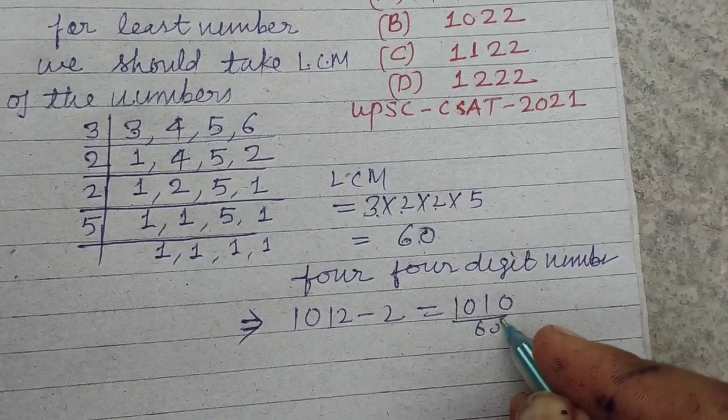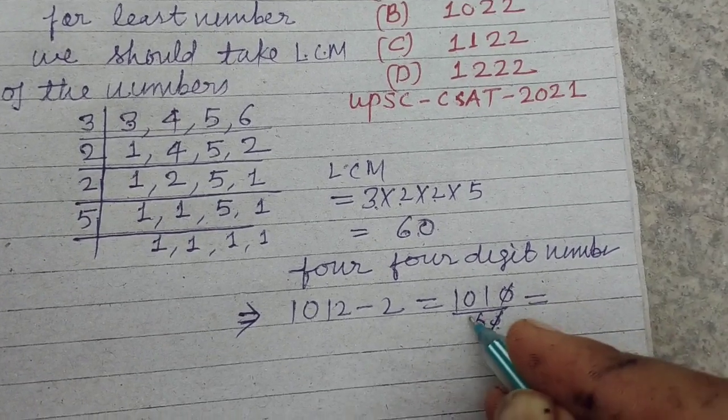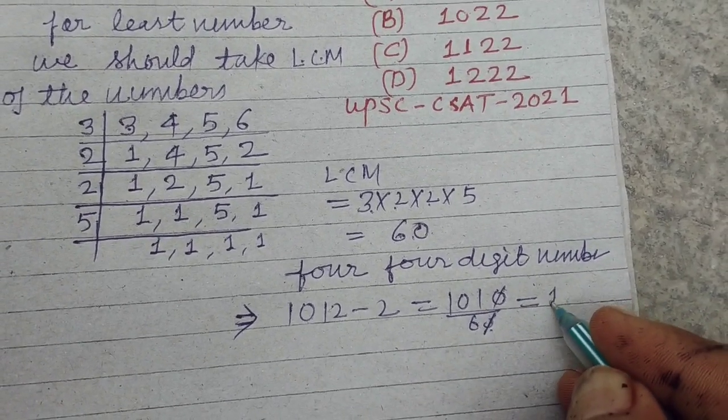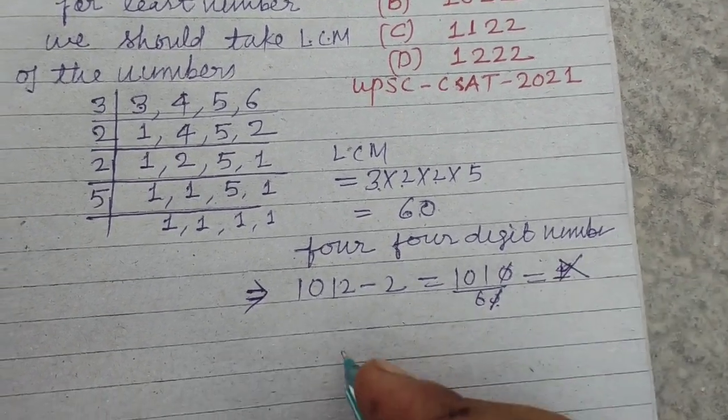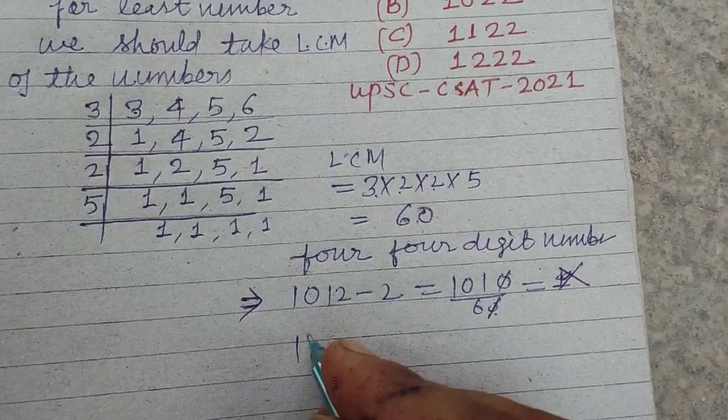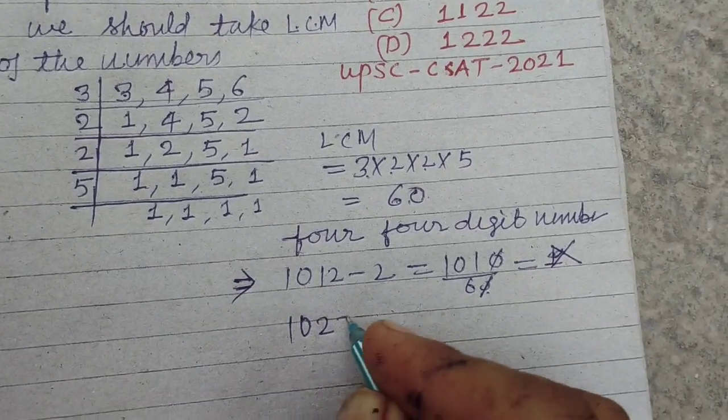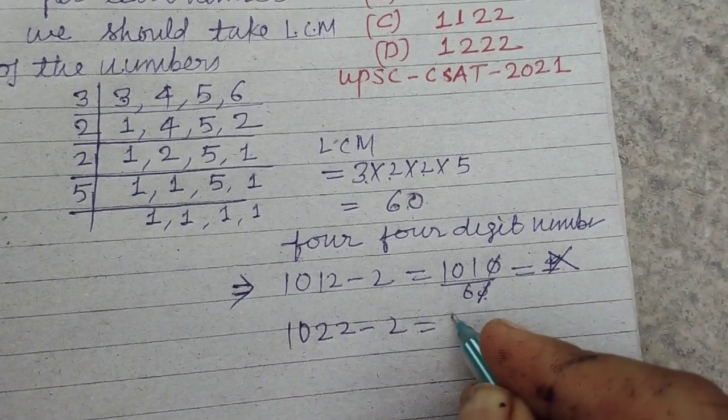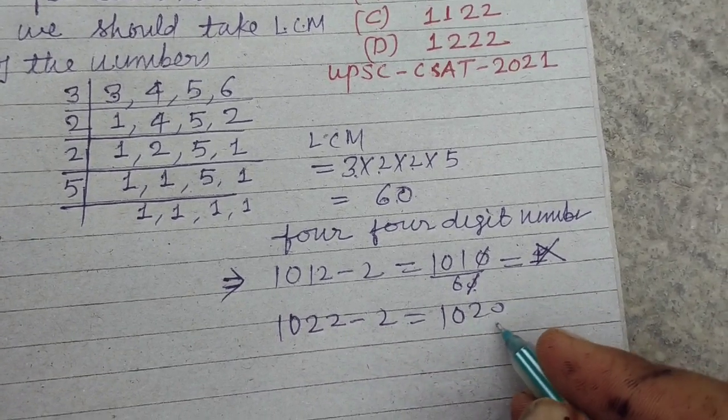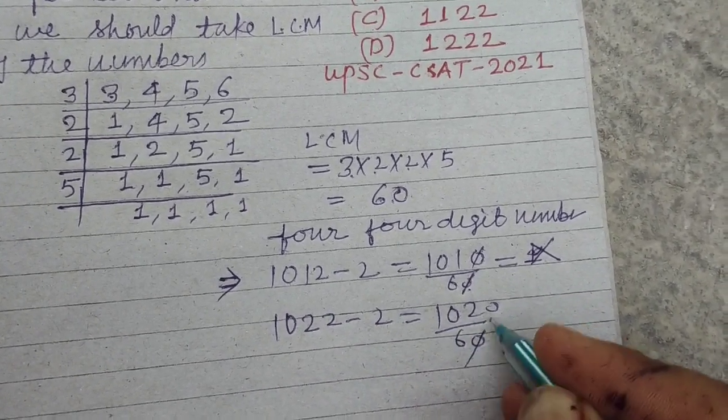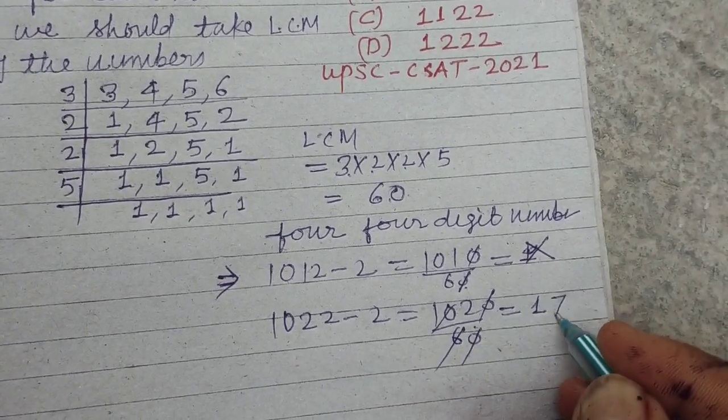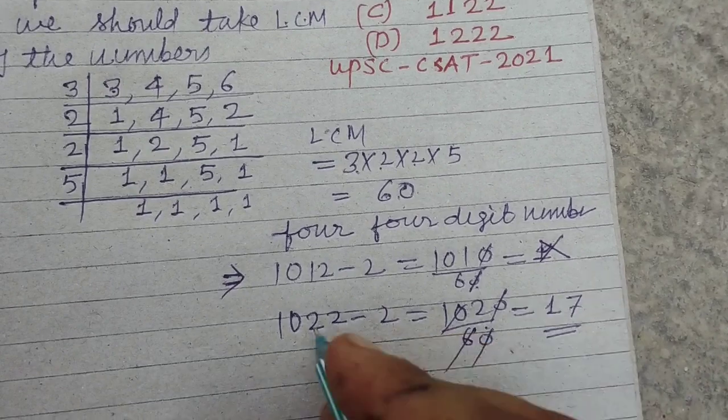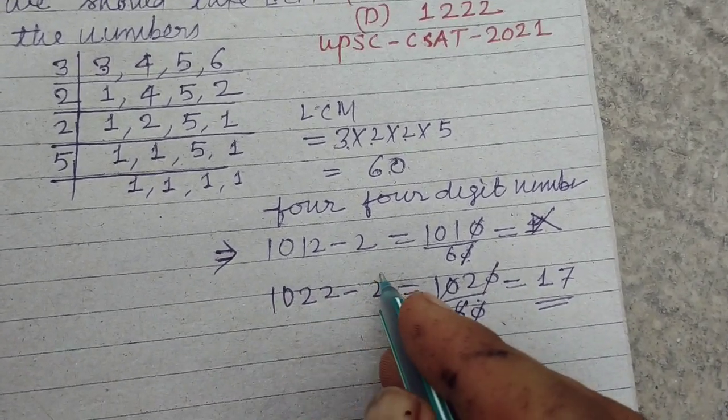We divide it by 60, so it's not completely divisible. 1022 - 2 = 1020 can be divided by 60. 6 × 1 is 6, 6 × 7 is 42, so this is the number: 1022.